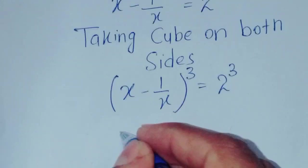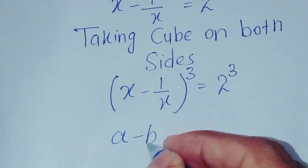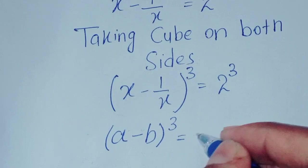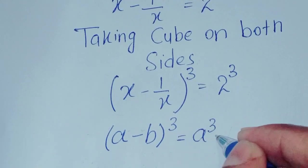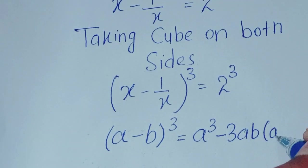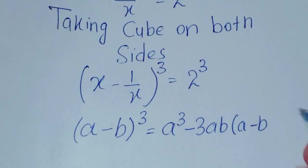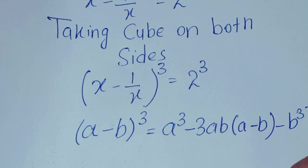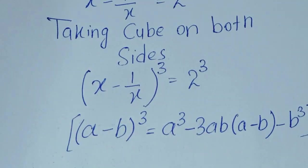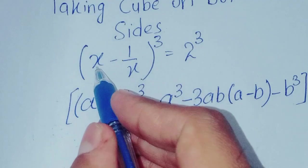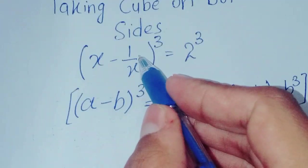We know that the formula of (a minus b) whole cube is equal to a cubed minus 3ab times (a minus b) minus b cubed.